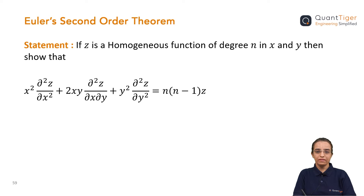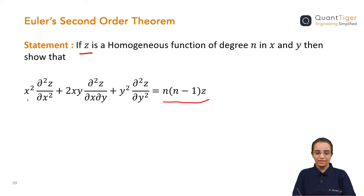So here as per the statement of Euler's theorem, it's again telling about the homogeneous function — if z is a homogeneous function of degree n, where the function is in terms of x and y, then show that x² · ∂²z/∂x² + 2xy · ∂²z/∂x∂y + y² · ∂²z/∂y² = n(n−1)z. It's quite similar to first order Euler's theorem, but here since it's second order, we have to differentiate it two times.